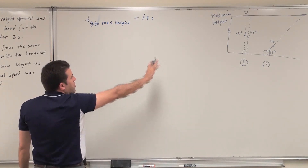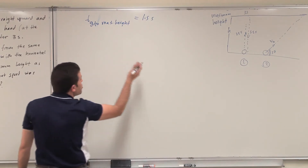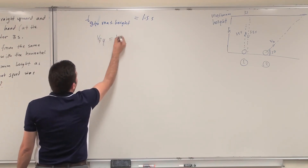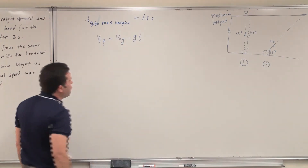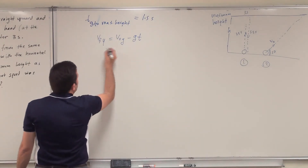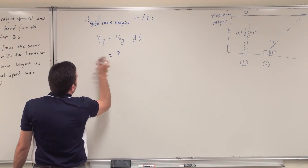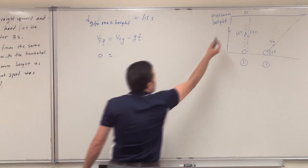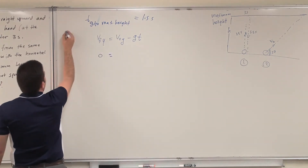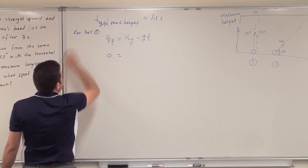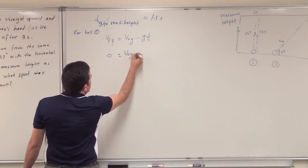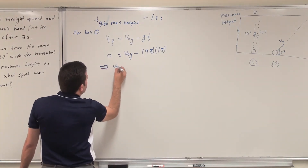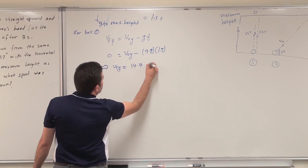Both balls are under the influence of gravity, a constant acceleration, so I can use the equation of motion: Vy_final = V0y minus g·t. For ball one, at maximum height Vy_final equals zero. So: 0 = V0y minus 9.8 times 1.5 seconds. This gives V0y equals 14.7 meters per second. This is the initial vertical velocity that ball one had to reach the maximum height.